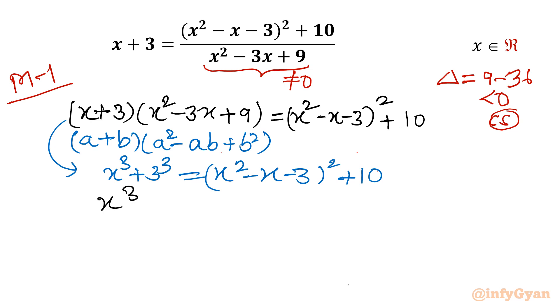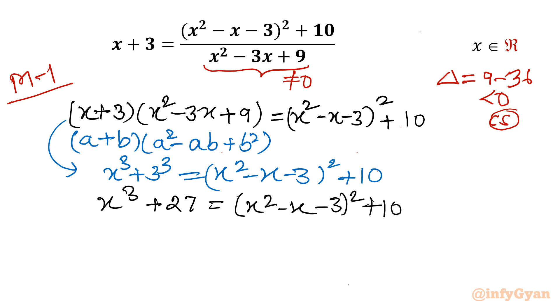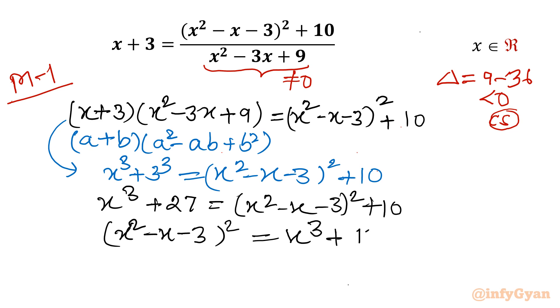I can write 3³ as 27, so it becomes x³ + 27 = (x² - x - 3)² + 10. Moving 10 to the left: 27 - 10 = 17 remains, giving us (x² - x - 3)² = x³ + 17. Now I will split 17 as 9 + 8, where 9 = 3² and 8 = 2³.